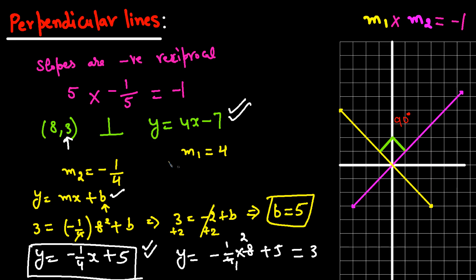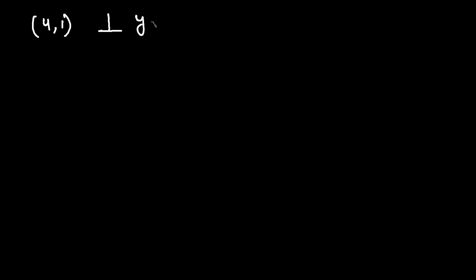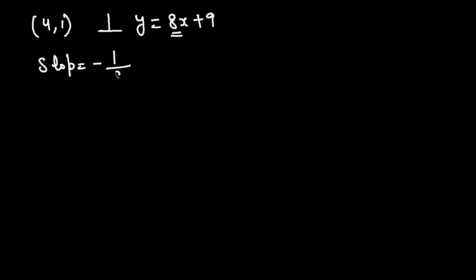Let's do one more example. We have an equation that passes through (4, 1) and is perpendicular to the line y = 8x + 9. Step 1: find the slope. The slope is the negative reciprocal of 8, which is -1/8.